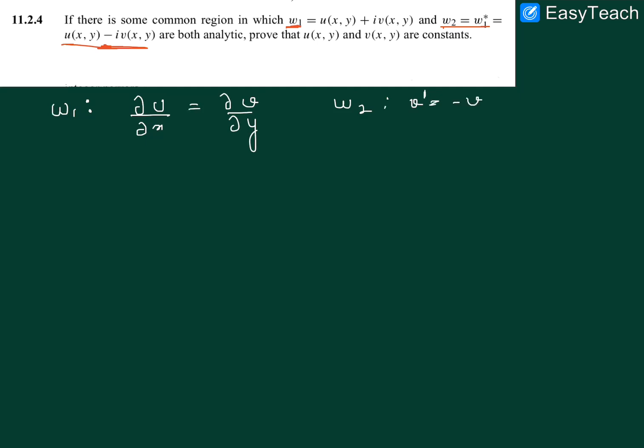is minus of v, so du by dx is dv dash by dy and that is nothing but minus dv by dy. Now these are two equations, one and two, so we will add both equations and we come to a point that